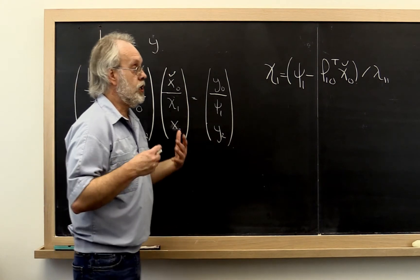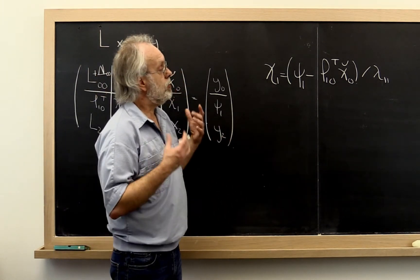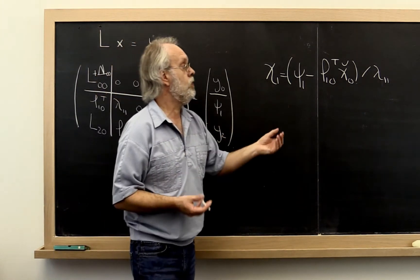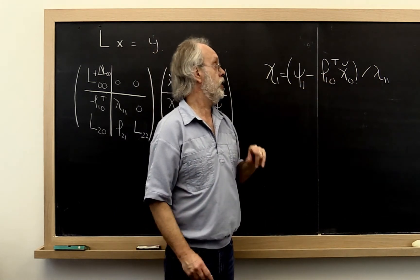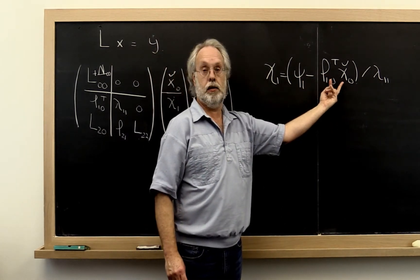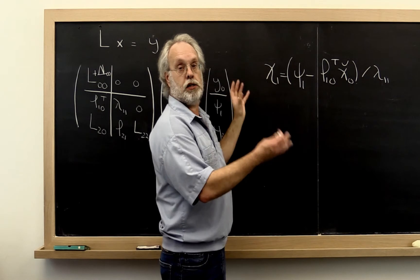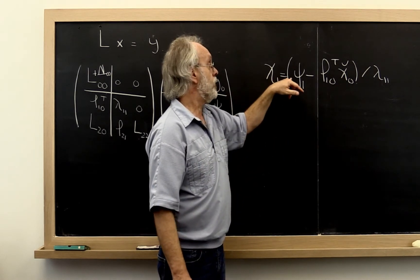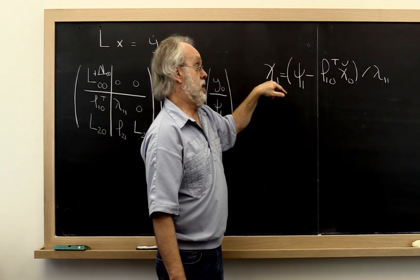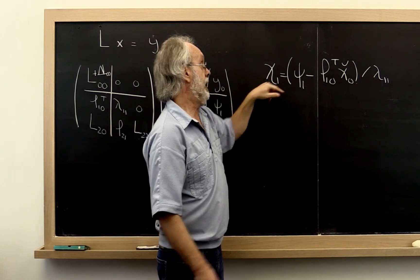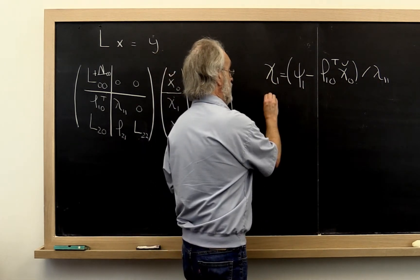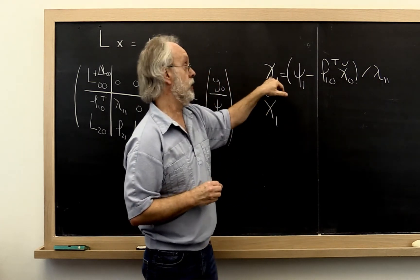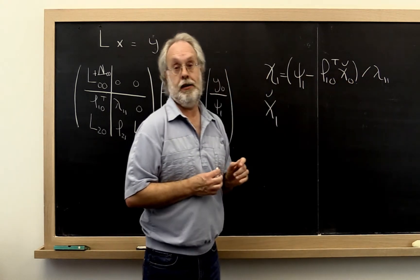So the approach we're going to take is we're going to say, okay, given what we know about how error accumulates in a dot product, let's come up with an expression of how that error accumulates when computing x1 check, the computed result when you perform this operation.